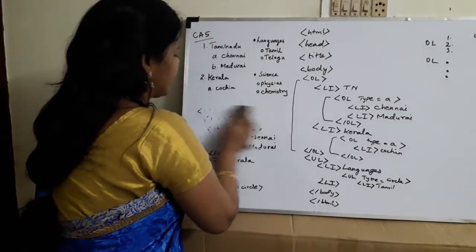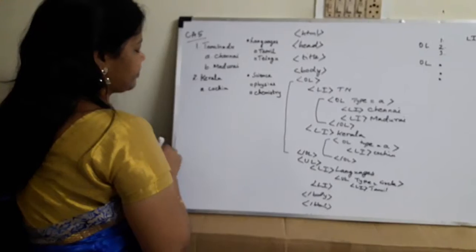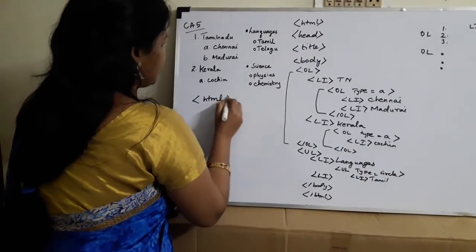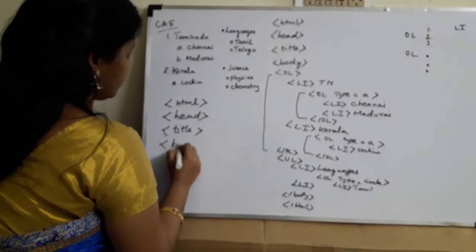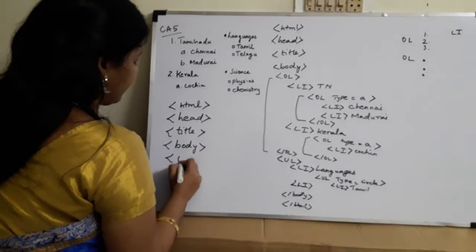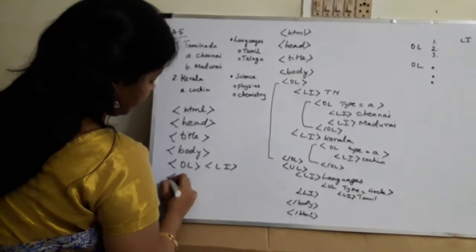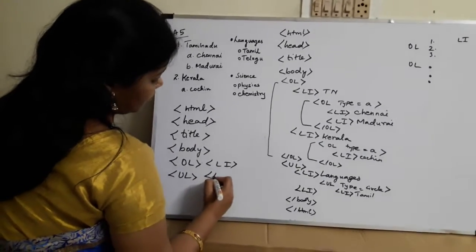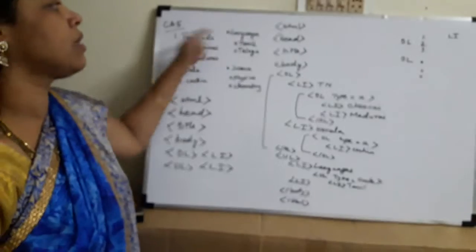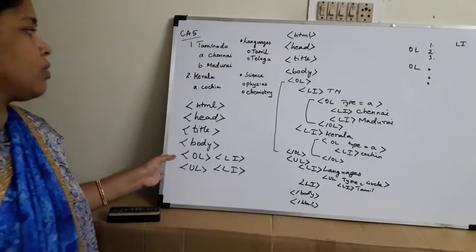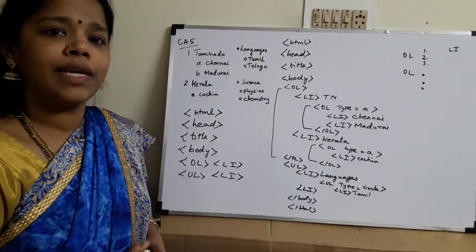Let's review the tags used in this session: the HTML tag, heading tag, title tag for giving a title, body tag for writing the entire program, OL for ordered list with LI for list items, and UL for unordered list also with LI. Type equal to A means listing begins with A; type equal to circle means it begins with a circle bullet. Every tag should have a closing tag. I hope this is clear — please send any comments, and thanks for watching. Please subscribe to the channel.